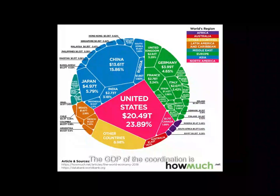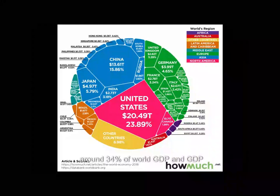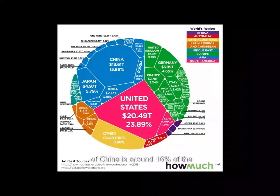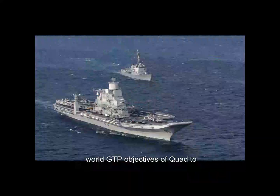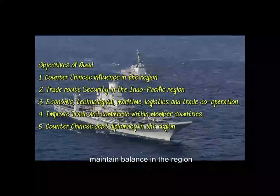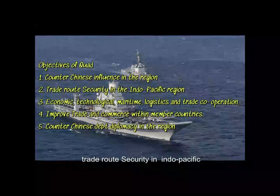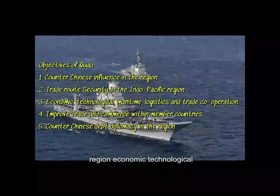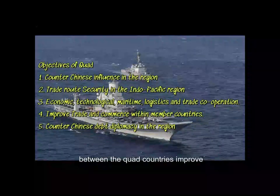The GDP of the Quad nations is around 34% of world GDP, while the GDP of China is around 16% of world GDP. Objectives of Quad include: to counter Chinese influence and maintain balance in the region; ensure trade route security in the Indo-Pacific region; and foster economic, technological, maritime, logistics, and trade cooperation between the Quad countries.